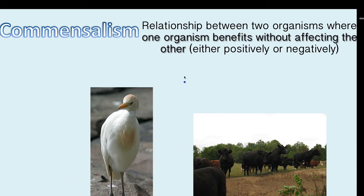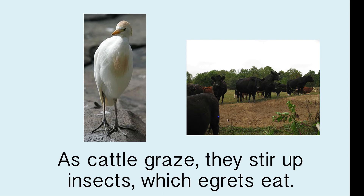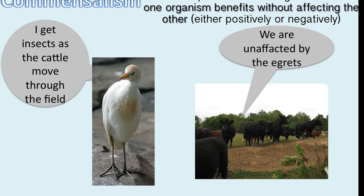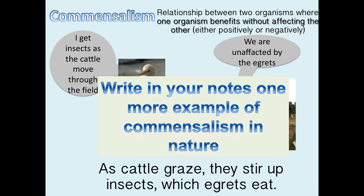Commensalism is the relationship where one organism benefits but the other is not affected at all — not positively, not negatively, as if nothing is even happening to that organism. An example is cattle and cattle egrets: as cattle feed they stir up insects in the field, and the birds come and eat those insects. The bird benefits by getting food, and the cattle are not affected at all. Come up with one more example of commensalism in your notes — we'll share as a group when we return to class.